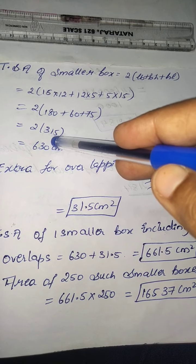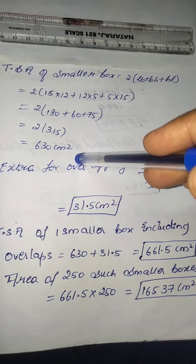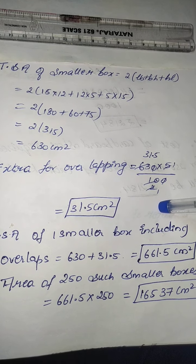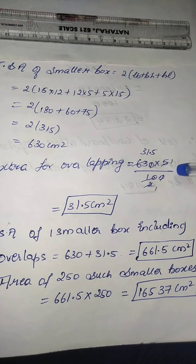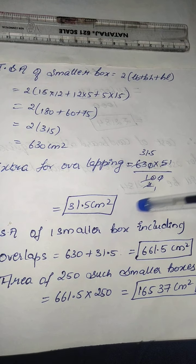And further multiplication with 2, I will get 630 centimeter square. Extras for overlapping - again it is 5 percent, so multiply with 5 and divide by 100. On cancellation, you will get 31.5 centimeter square.